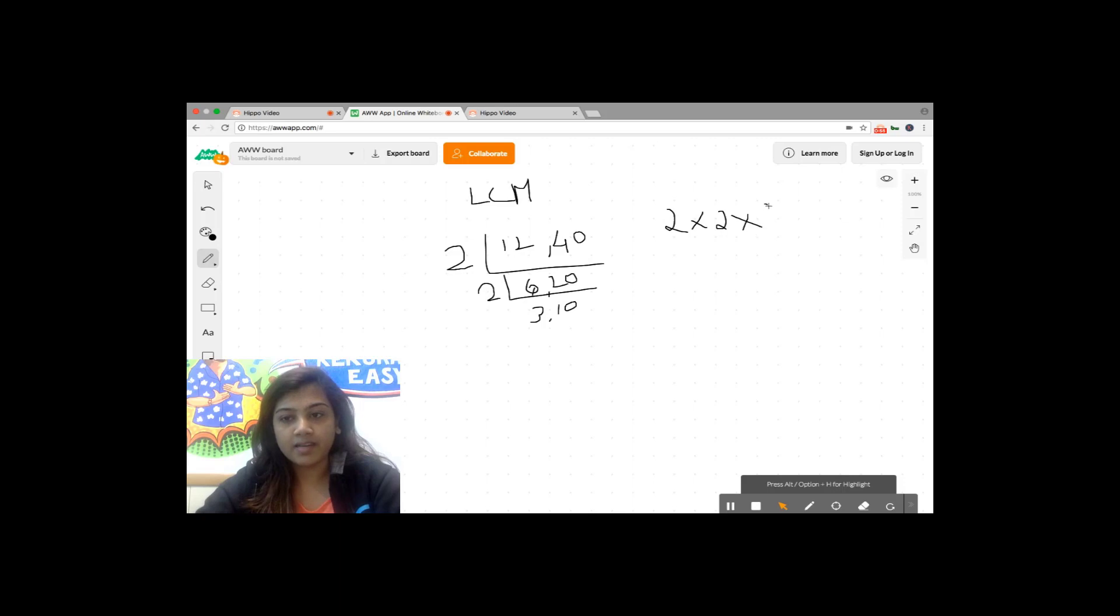So to calculate the LCM, you will just have to multiply the numbers on the side and the numbers on the bottom. The LCM of 12 and 40 is 120.